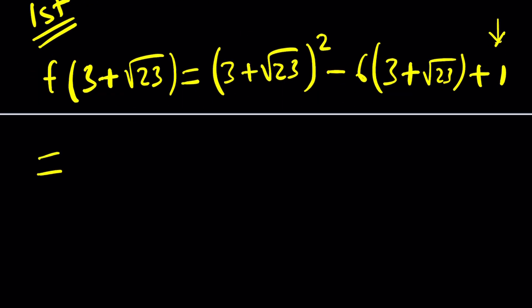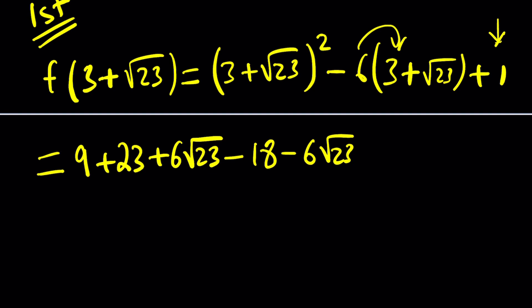This is what we're looking for. So let's expand it as much as we can. 3 plus root 23, if you remember the formula for a plus b quantity squared, it is a squared plus b squared plus 2ab. Let's go ahead and distribute the next one. That's going to give us minus 18, minus 6 root 23, and now we have a plus 1 at the end.